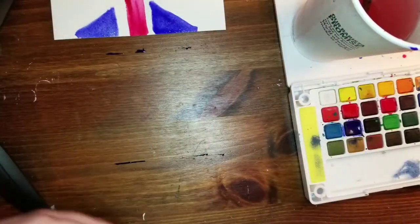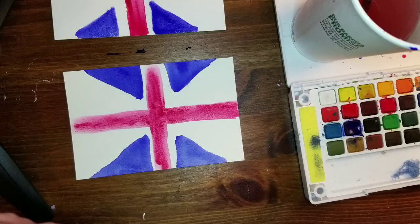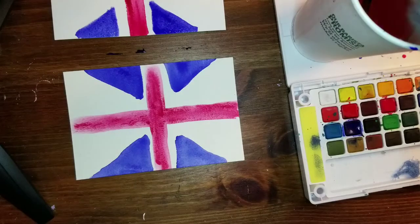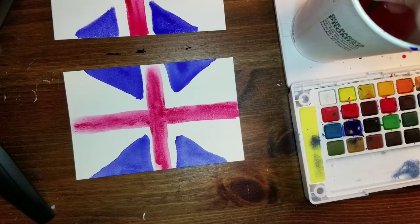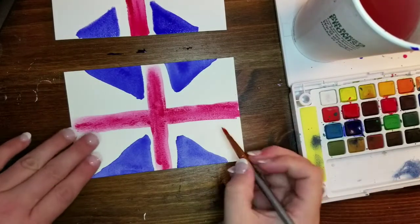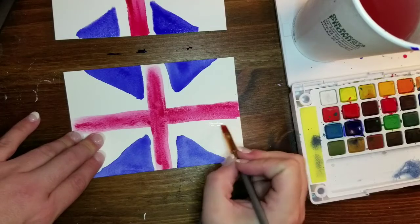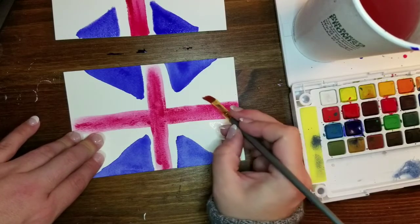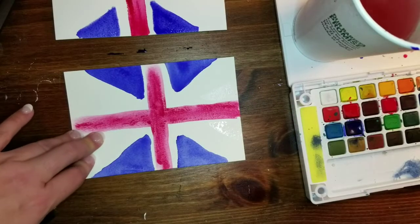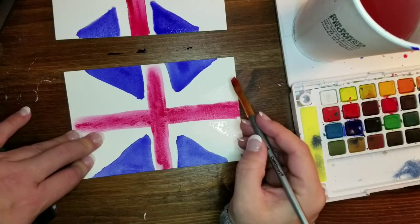Then once it's dry it'll look like this. Step three is to put in the side triangles. So again I'm going to use just water and put in a triangle there and a triangle there, make sure I'm doing it right.